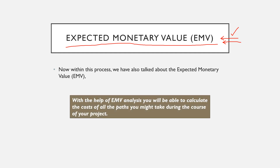With the help of Expected Monetary Value analysis, you can calculate the costs of all the paths you might take during the course of your project. Every time your project has multiple paths it can go, you can perform EMV analysis to calculate the expected monetary value of each path. Once you have the EMVs of all those paths, you can decide which path to take.